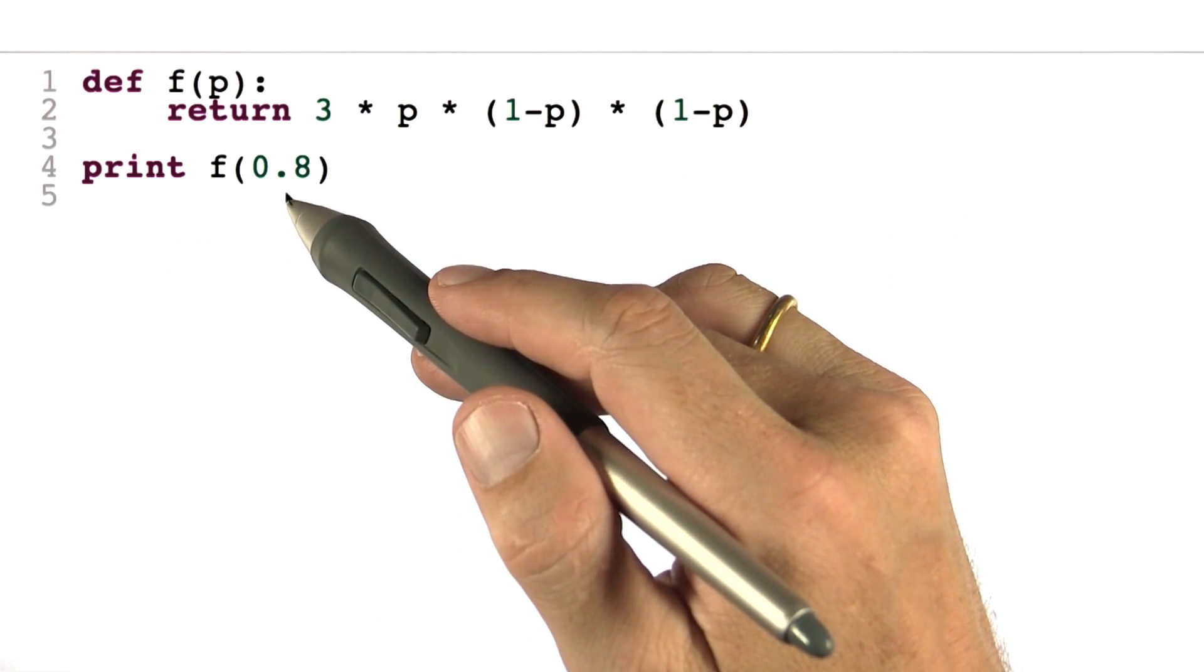If, for example, I give as an input 0.8, then I get 0.096 as an answer.